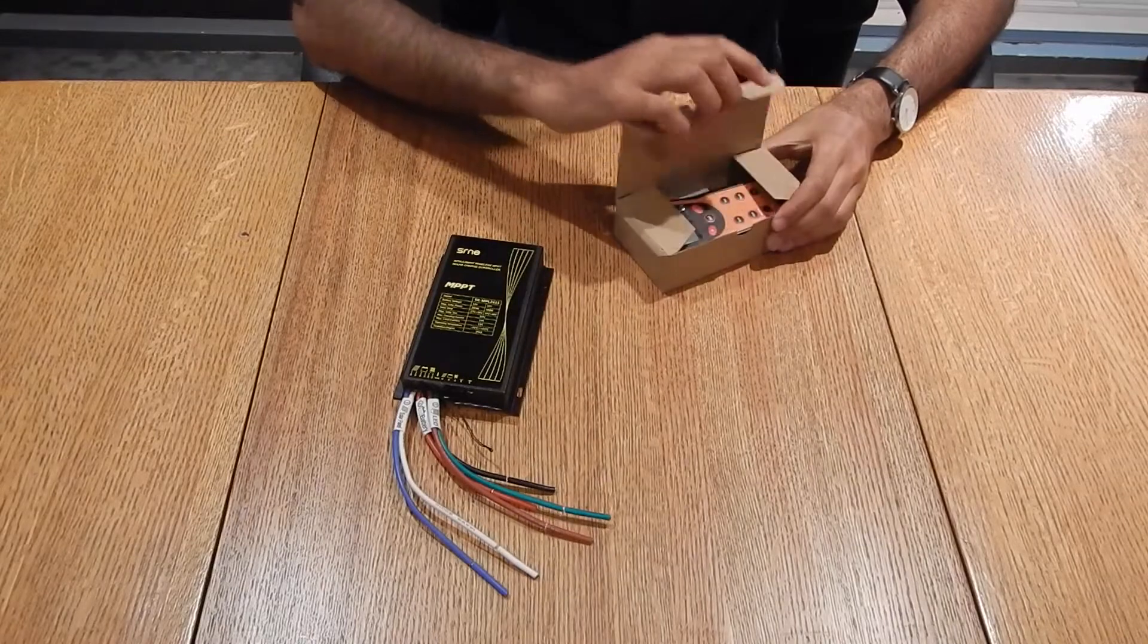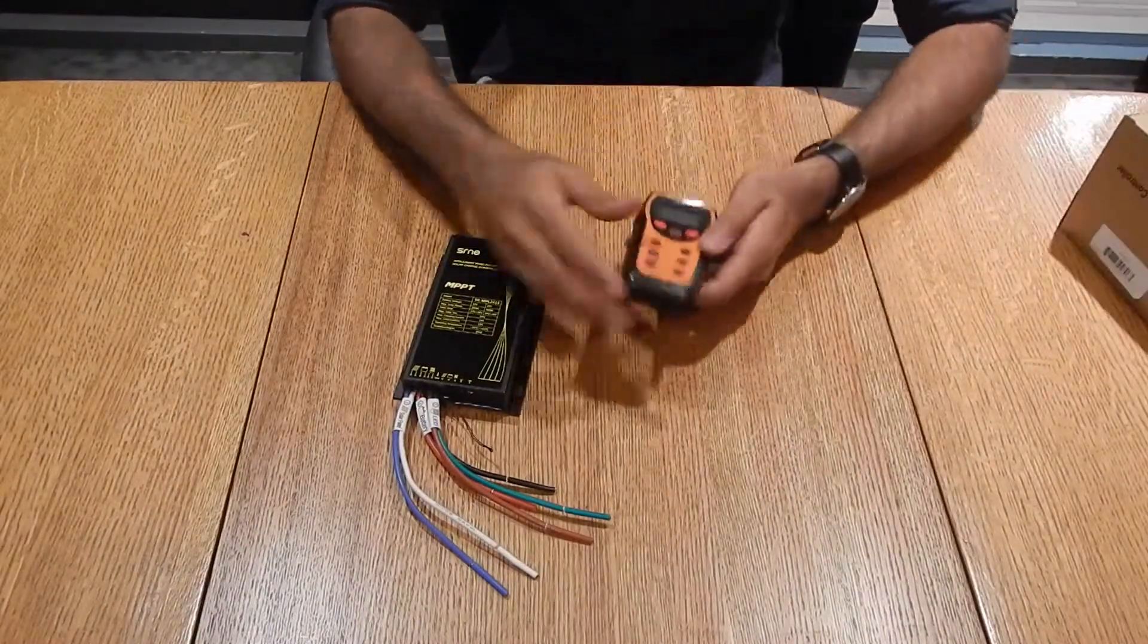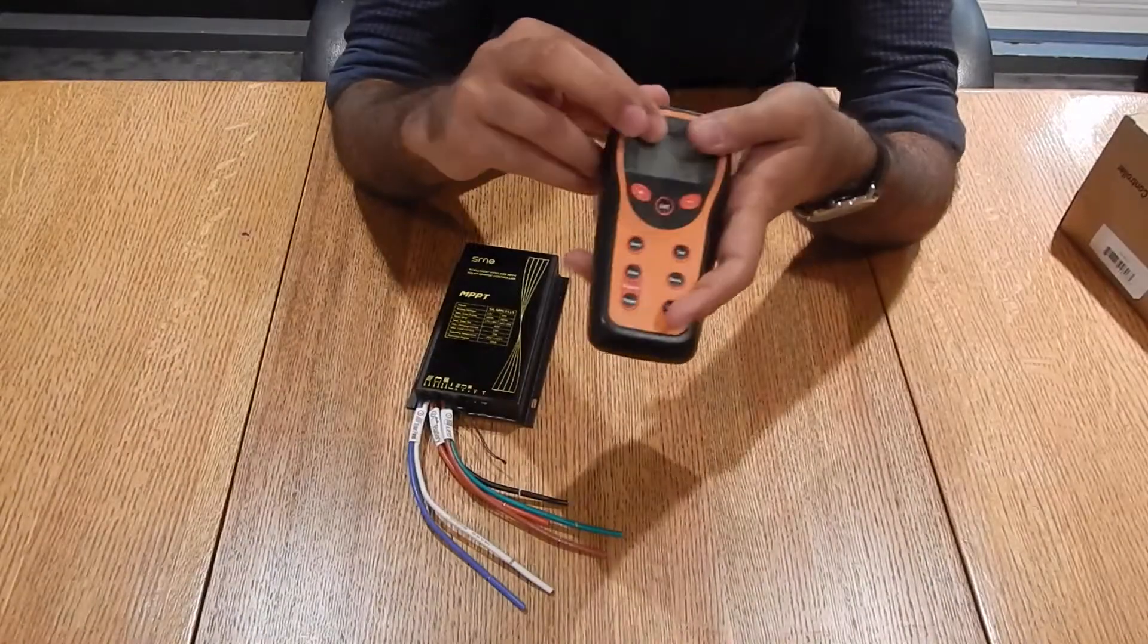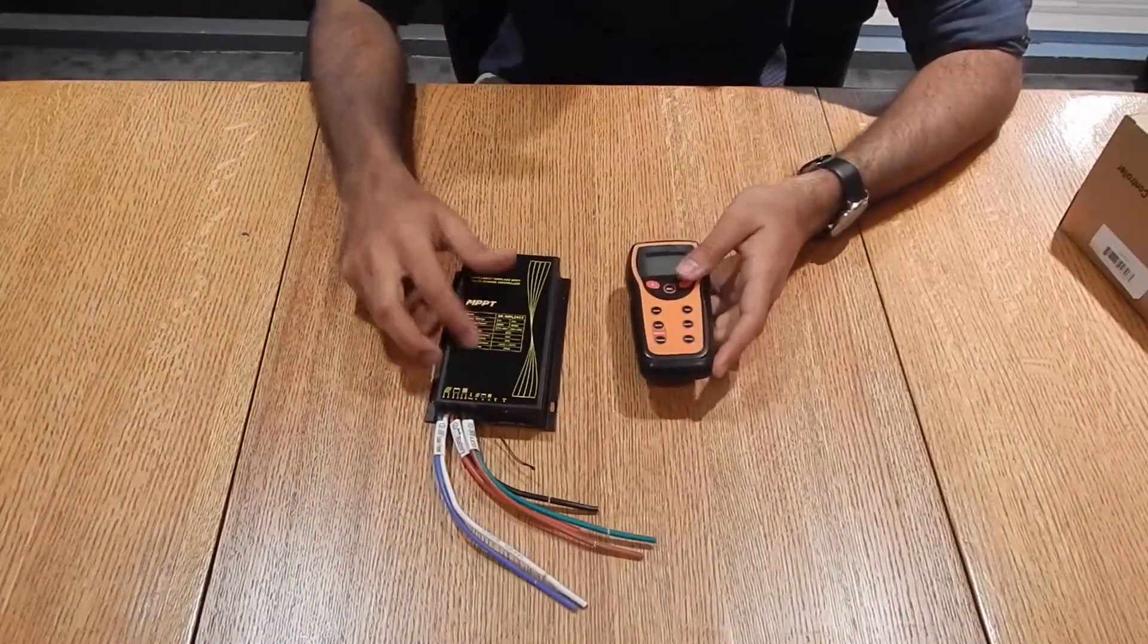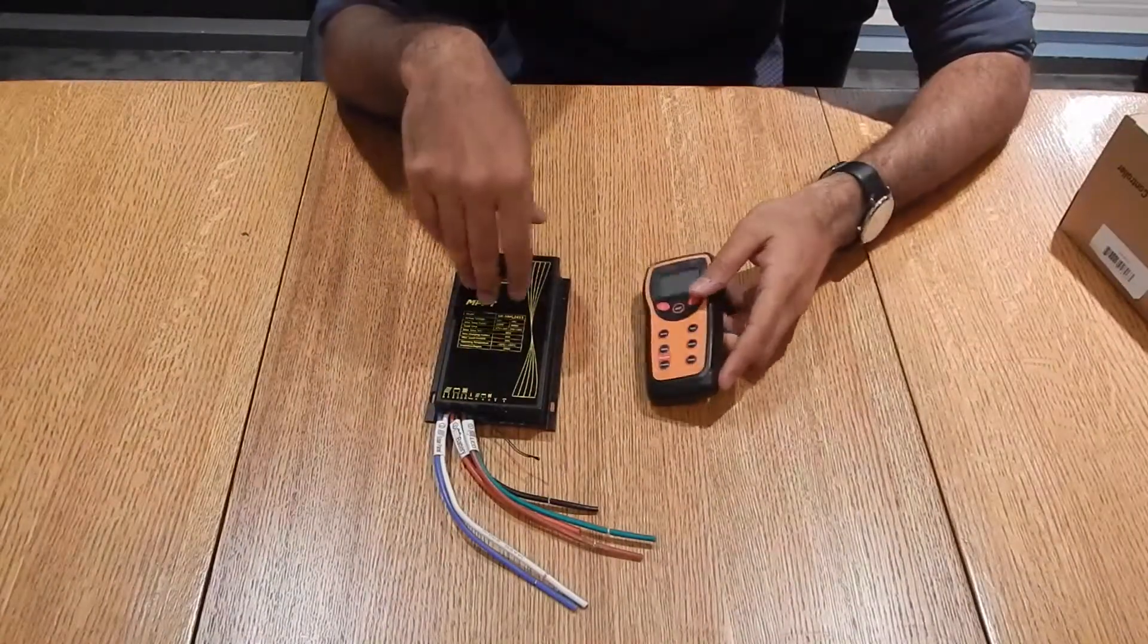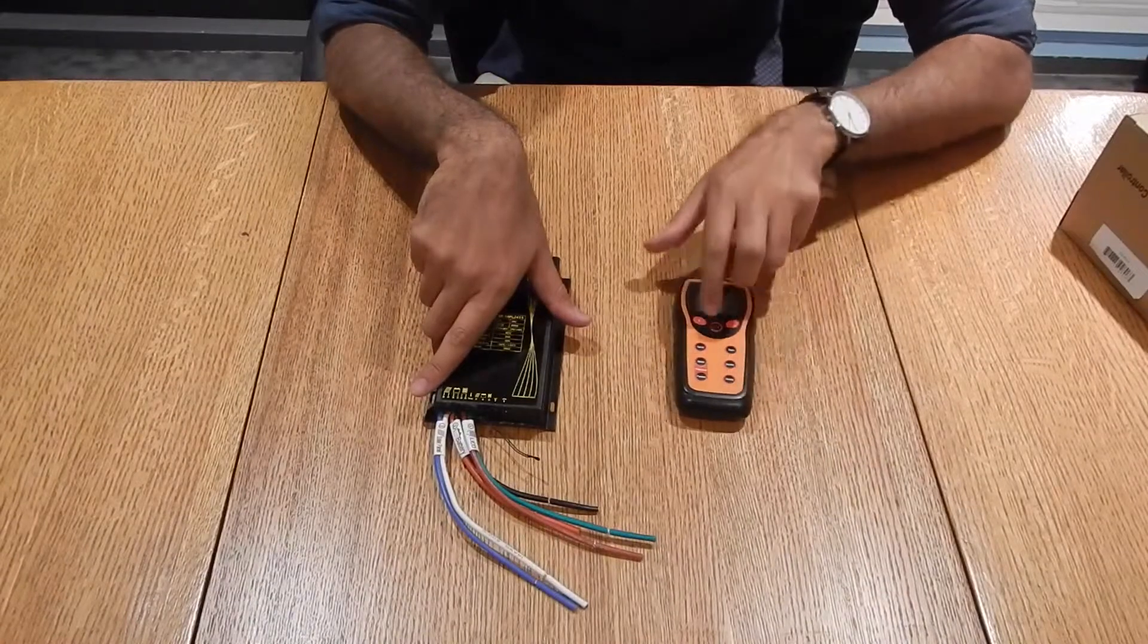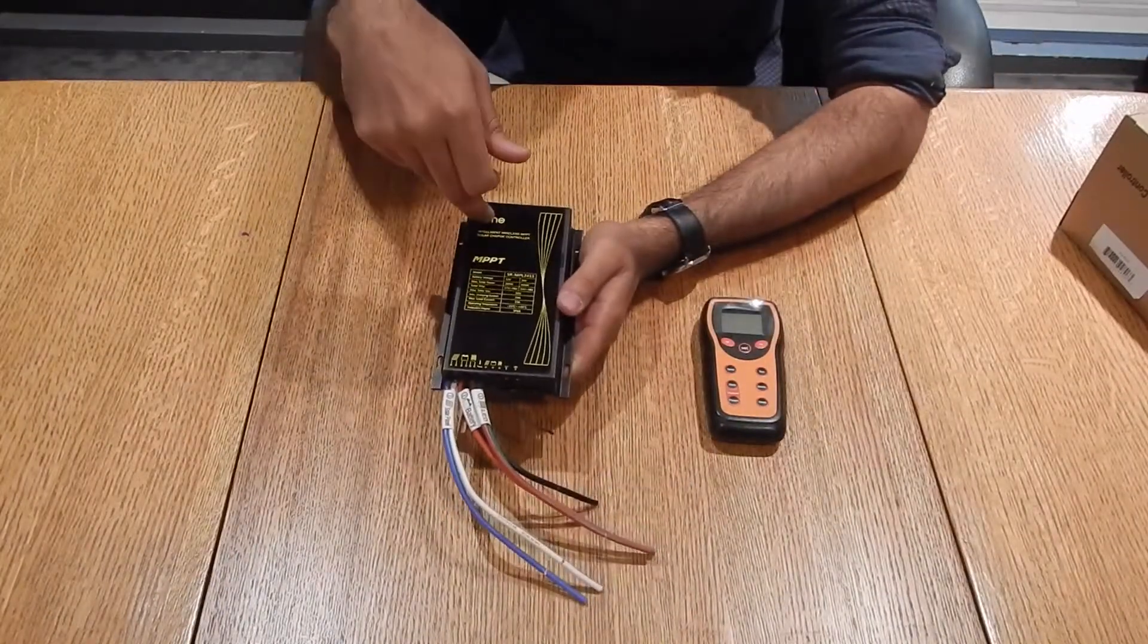you use is the CUALL2. So the CUALL2 comes with an LCD screen and it's a wireless remote you can pair up with your charge controller. You can read the temperature of the surrounding of the charge controller. You can also check status using the remote itself.